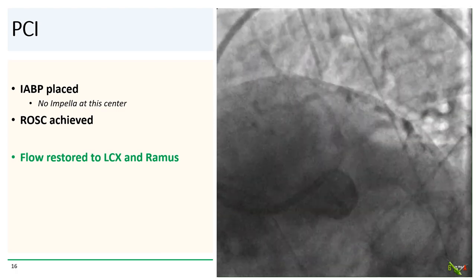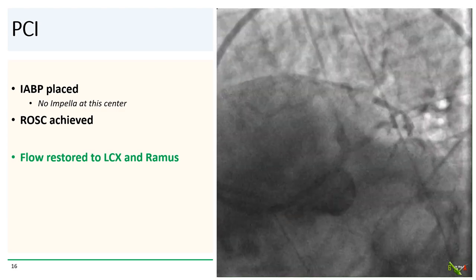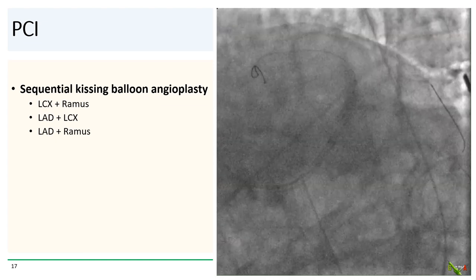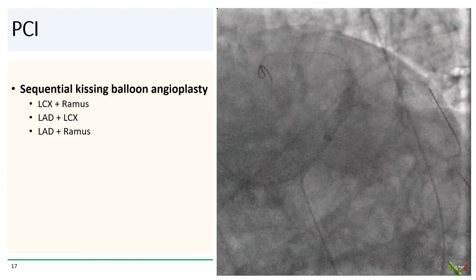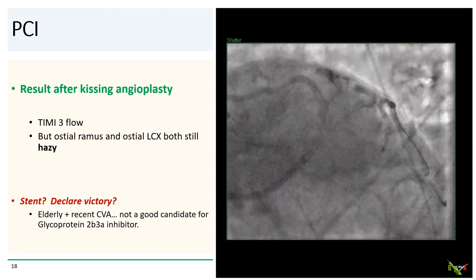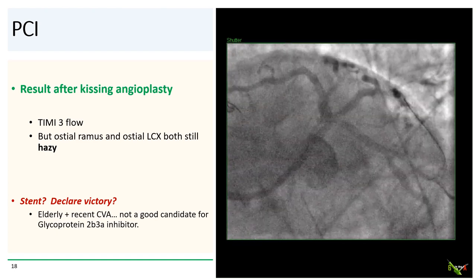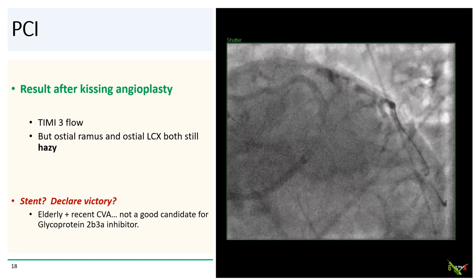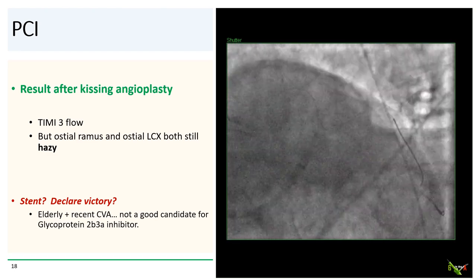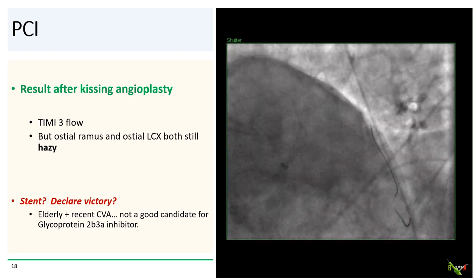Flow was restored to the circ and the ramus. We inserted a balloon pump — Impella was not available at the center. We next did a sequential kissing balloon angioplasty of the circ and ramus, then the LAD and the circ, and then the LAD and the ramus. Here's the angiographic result after kissing angioplasty. We had TIMI-3 flow everywhere, but the ostium of the ramus and the ostium of the circ both still looked somewhat hazy.